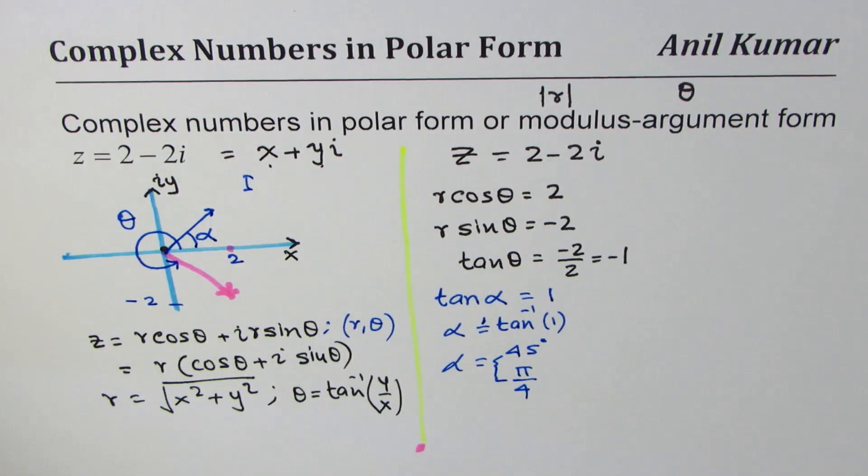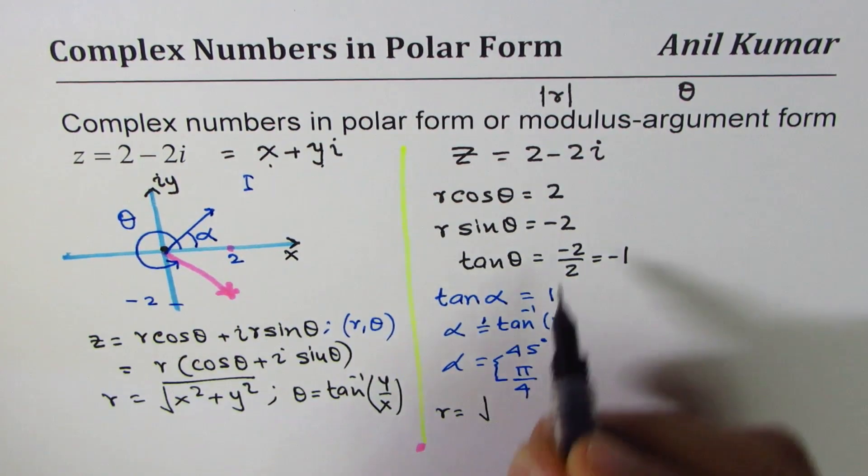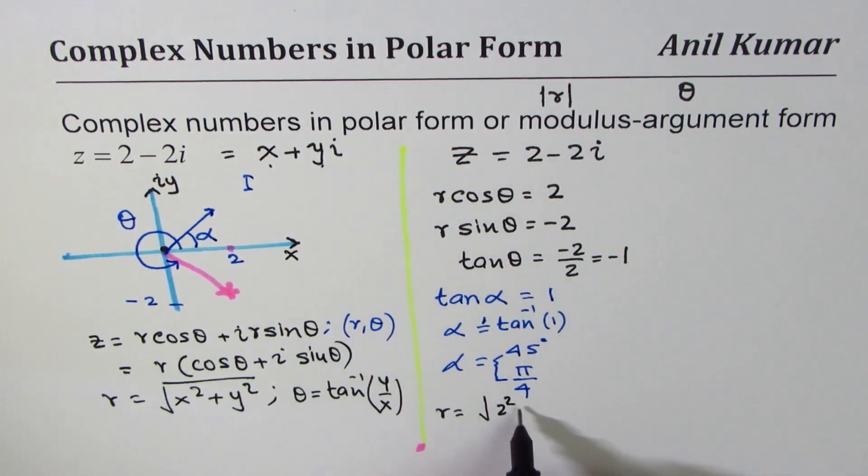We know the value of angle, we can find what r is. r is equals to square root of 2 squared plus minus 2 squared and that gives you 4 plus 4 as 8. Square root of 8 gives you 4 times 2 which is 2 square root 2.